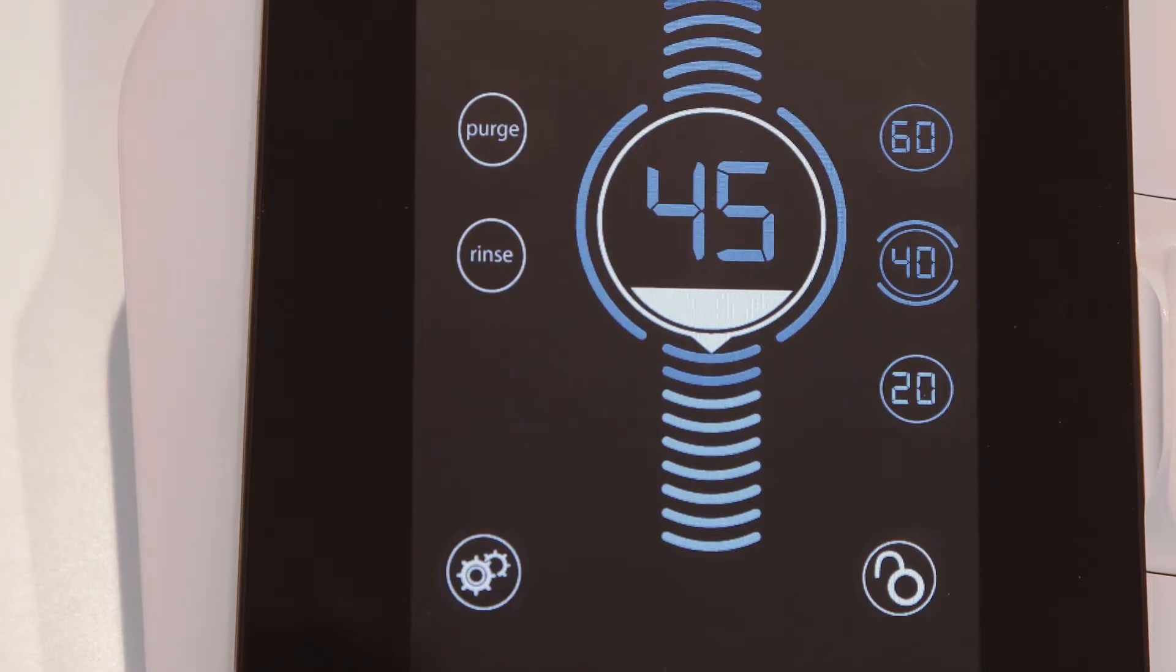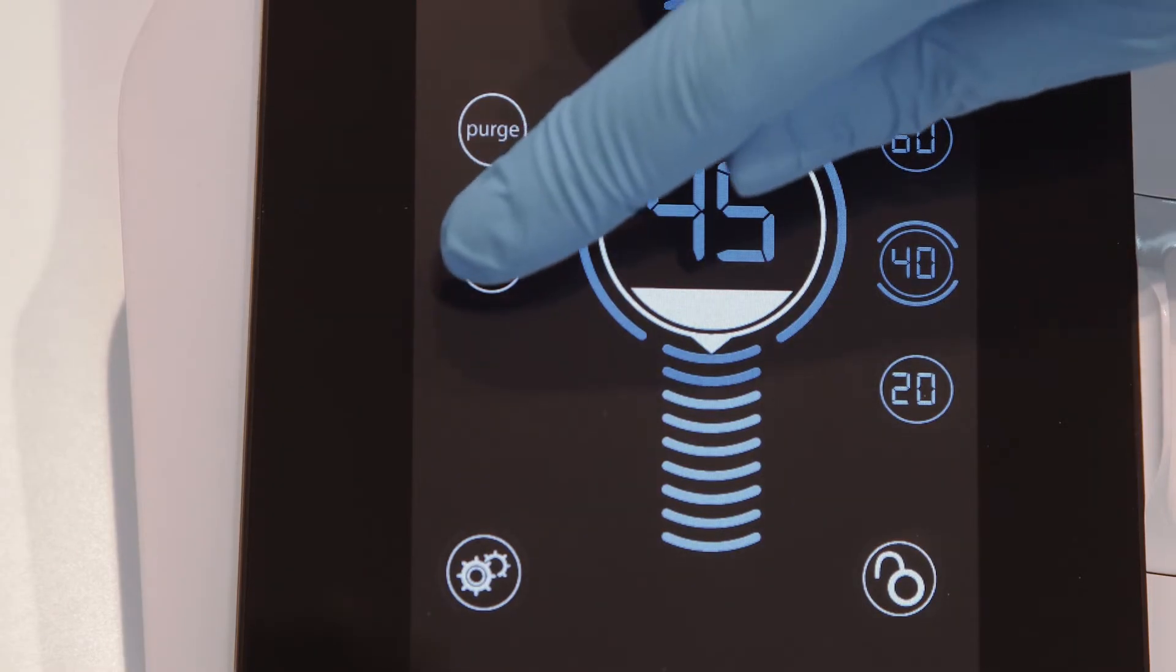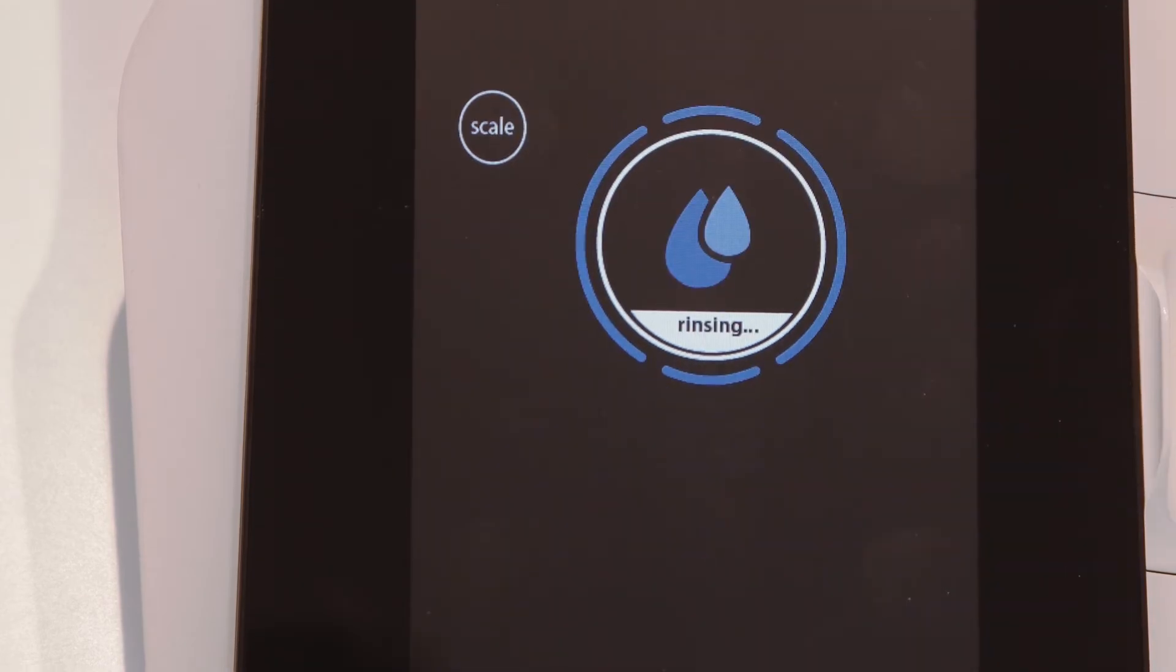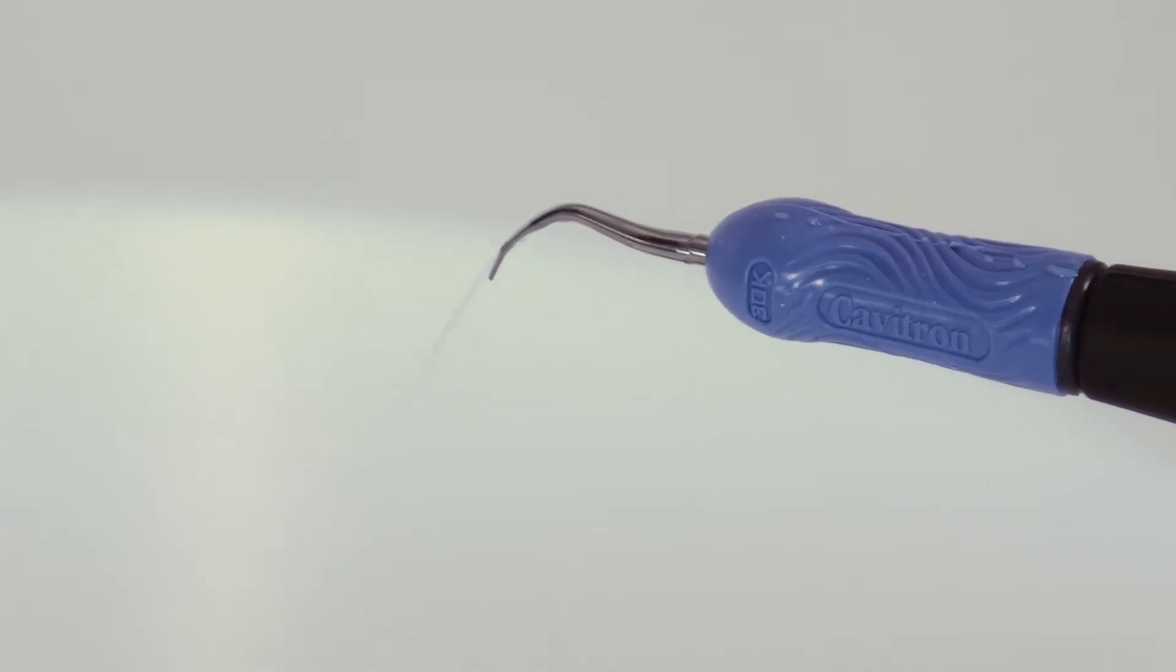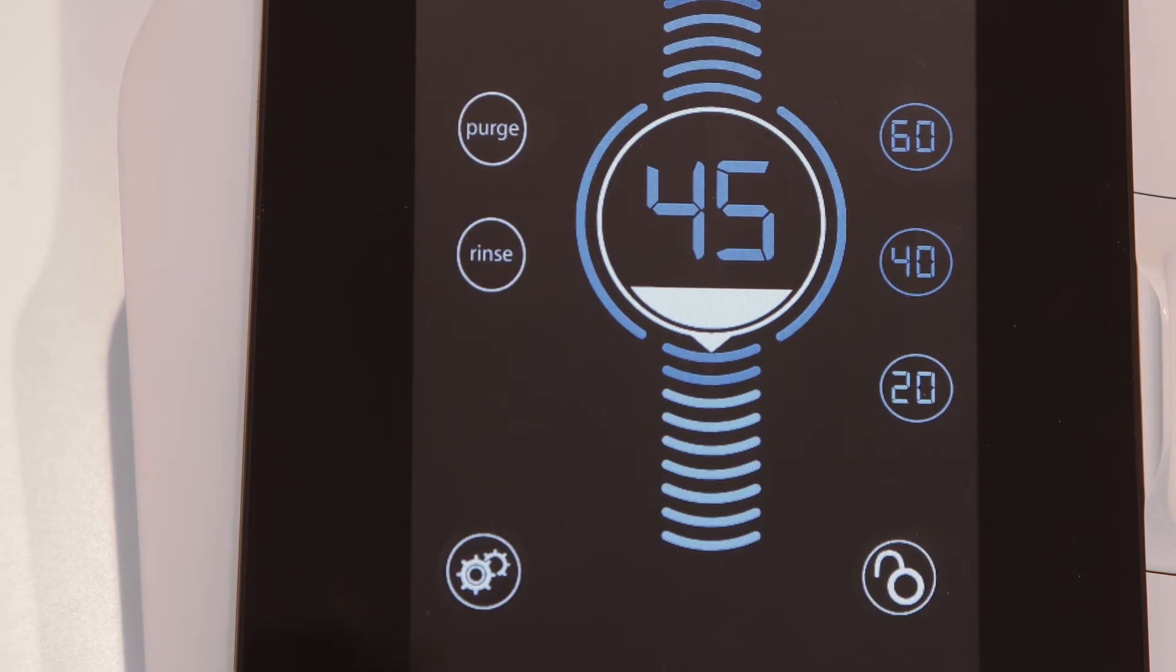Users will operate this feature during an ultrasonic scaling procedure when lavage is desired with no cavitation. To use, depress and hold the foot pedal for rinse mode cycle. To exit rinse mode, tap the scale button to return to the main screen.